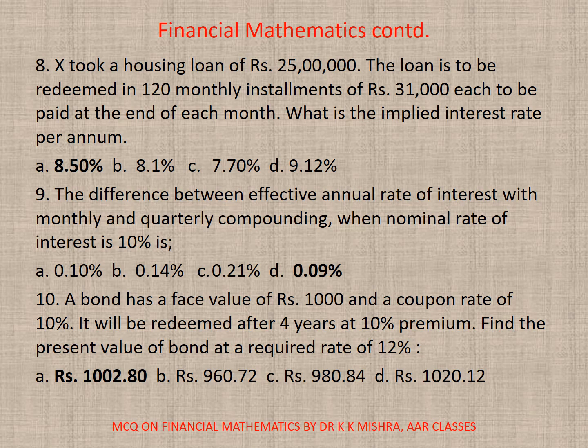Question 10: A bond has a face value of rupees 1,000 and a coupon rate of 10%. It will be redeemed after 4 years at 10% premium. Find the present value of the bond at a required rate of 12%. The correct option is A — 2,002.8.